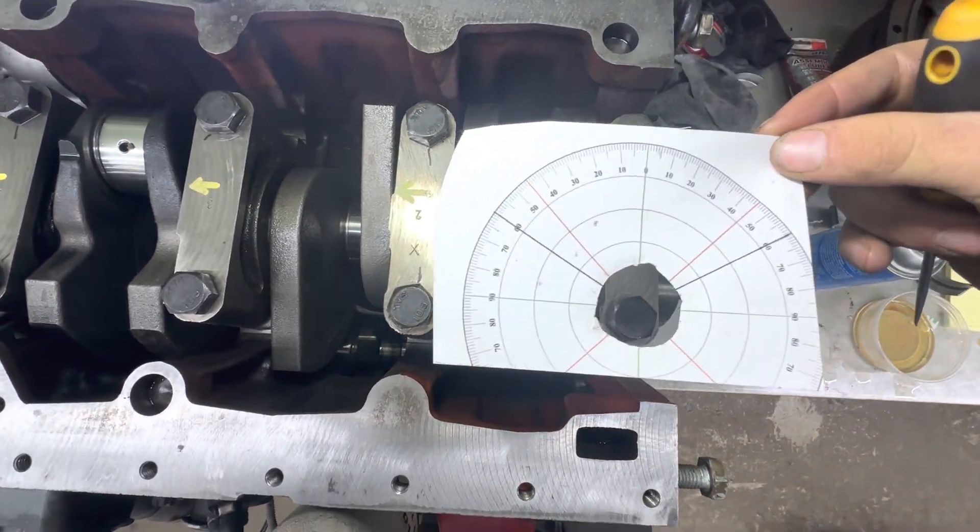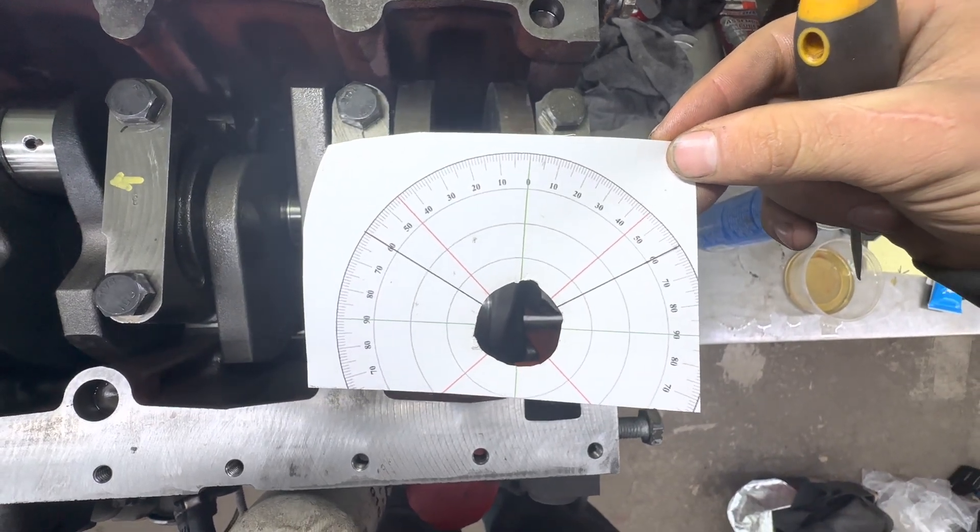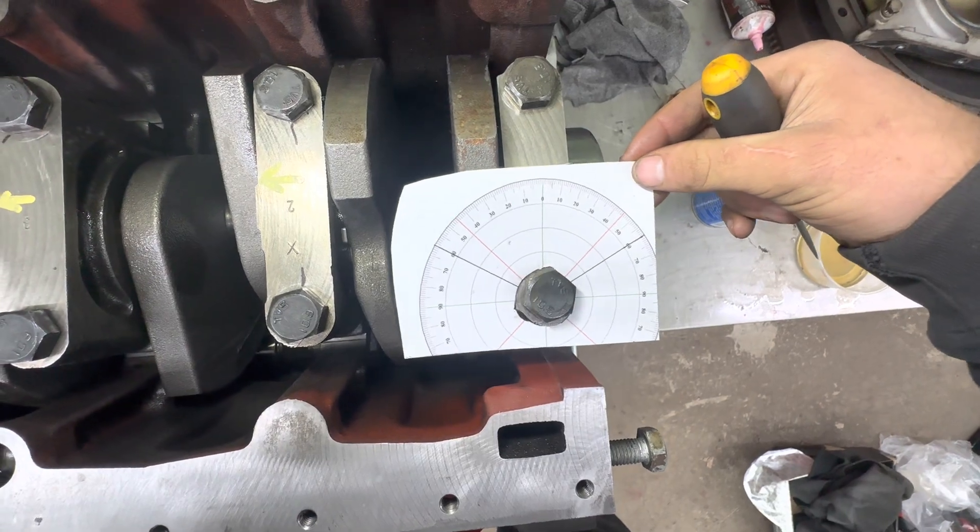So here's what I came up with. Quick and simple, I just printed off this 360 degree protractor off Google and cut out the center so that it fits over my bolt.